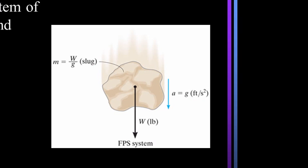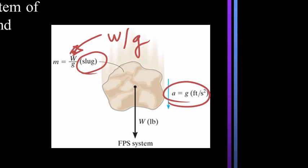In the FPS, or foot-pound-second system, the unit of mass is the slug, and it is the weight divided by the gravity. Gravity is g, which in these units is 32.2 feet per second squared.